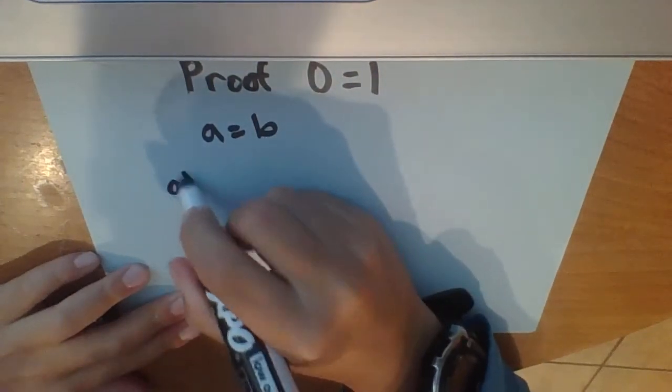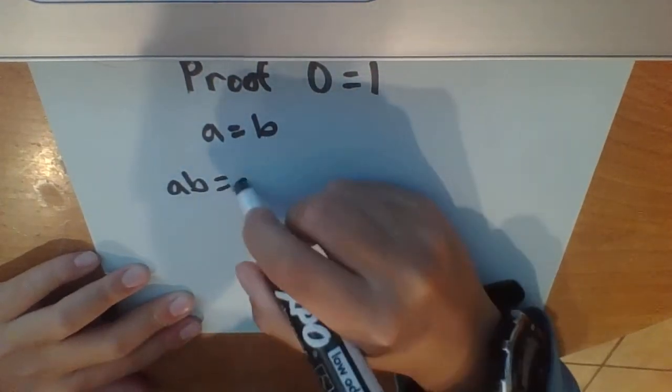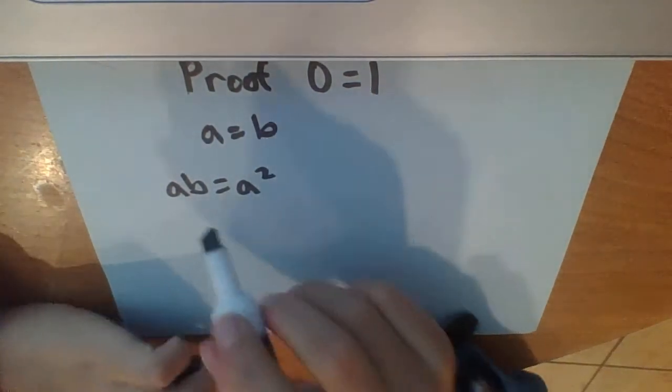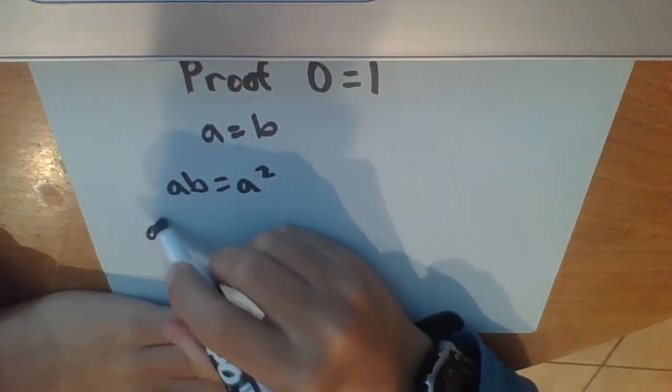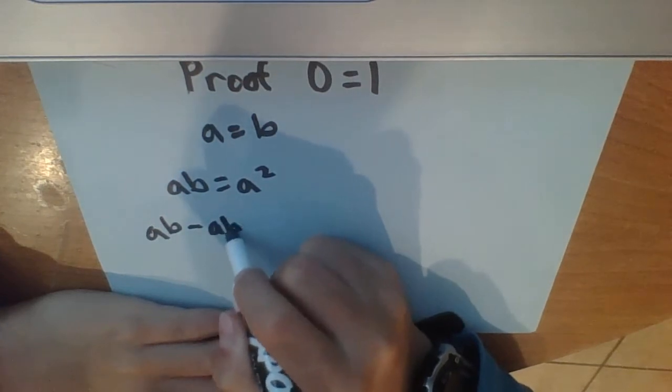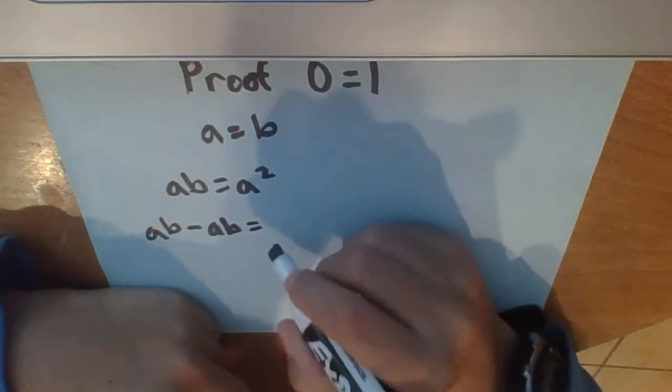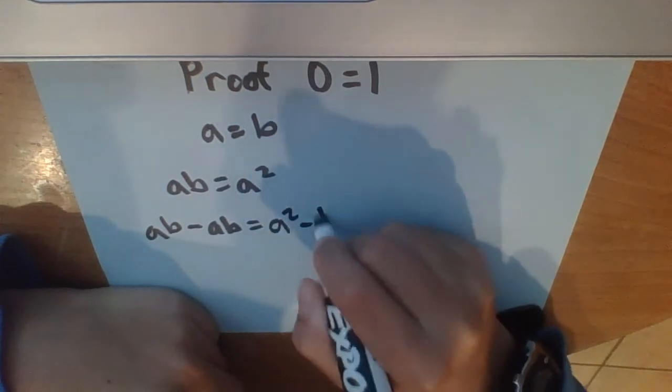So then that means ab should be equal to a squared if you think about that correctly. So then you can keep going and subtract ab from both sides, ab minus ab, which is also equal to a squared. So that is equal to a squared minus b squared.